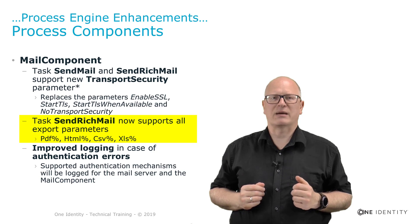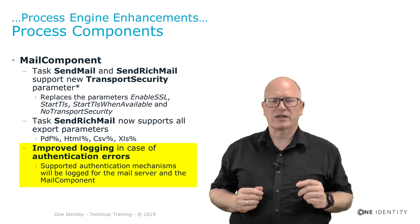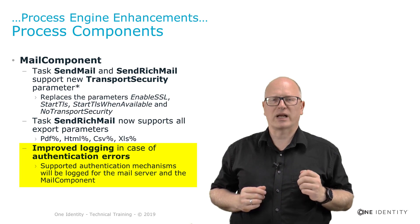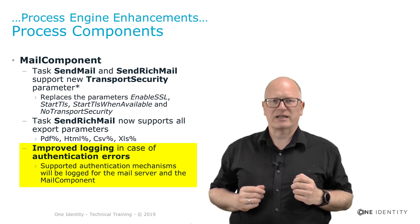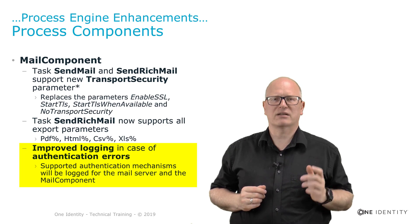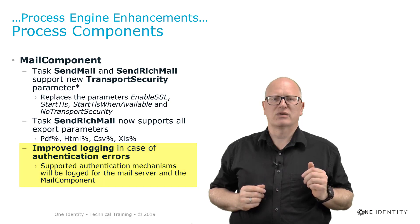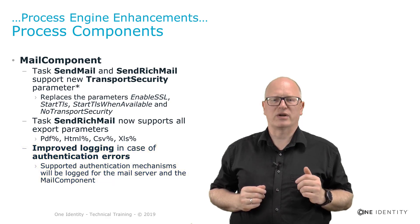These export formats are now available when sending rich mails out. Last but not least, the developers improved the authentication error logging so that if something doesn't work when sending that email out, we get a better error message in the log. This makes it easier to find out the problem with sending emails. Remember, there are many parameters you have to set, and if one of them is not correct, you run into trouble. Now this logging should help you in more detail to tell you what exactly should be reconfigured.